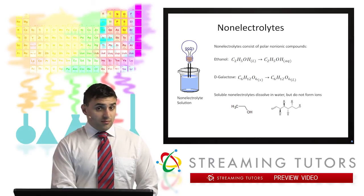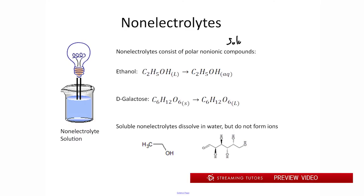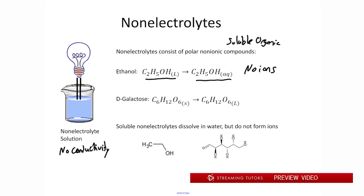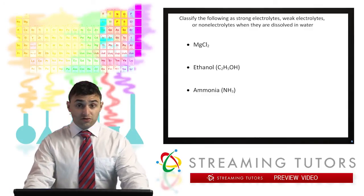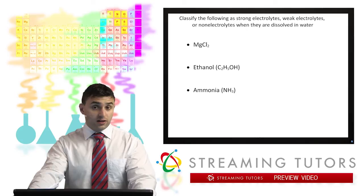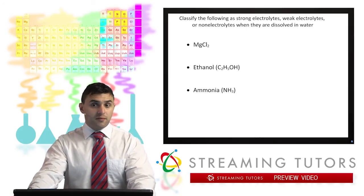The final classification is non-electrolytes. Some compounds, particularly soluble organic compounds, dissolve in water but don't form ions. For example, ethanol dissolves in water and hydration shells form around it, but no ions are produced — it stays as a neutral species. Since there are no charged species, there's no conductivity in these solutions. In general, any soluble organic molecule that is not an acid, base, or soluble salt is a non-electrolyte. Examples include sugars like D-galactose.